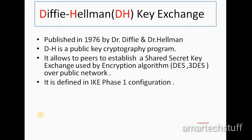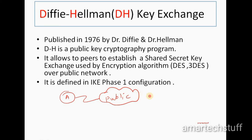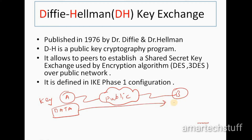In the last video on terminologies part one, we saw something known as symmetric encryption. We took an example with node A, a public network, and node B. In symmetric encryption, when node A wants to send data to B, it will use a key to encrypt the data and send the encrypted data to B. Then B will use the same key to decrypt the encrypted data back into plain text.